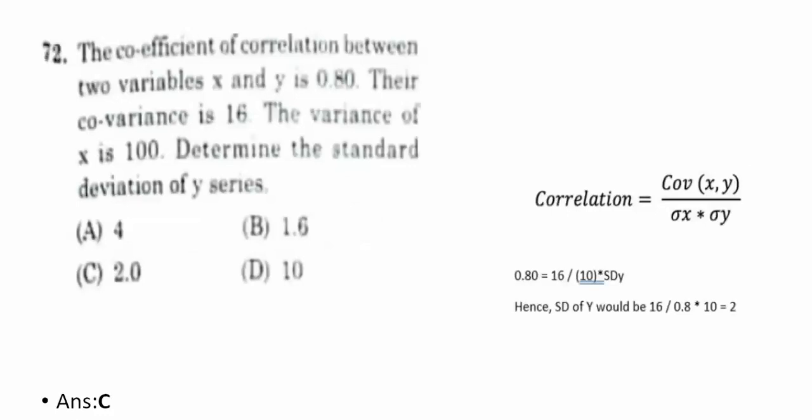Seventy-second question: the coefficient of correlation between X and Y is 0.80, their covariance is 16, and the variance of X is 100. Determine the standard deviation of Y. Using the formula r = Cov(X,Y)/(σx × σy): 0.80 = 16/(10 × σy), so σy = 16/(10 × 0.80) = 2. The correct answer is C — 2.